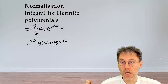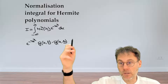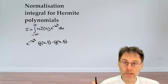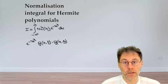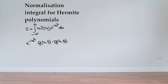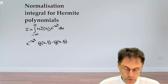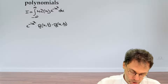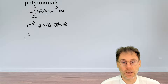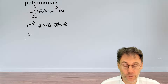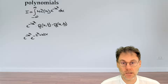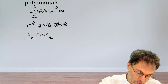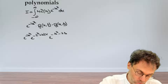Pause the video and write down explicitly what this is — it's basically one big exponential — and then use the definition of the generating function to write it as a series expansion. On the left-hand side, we have exponential minus x squared, then exponential minus t squared plus 2tx from the first generating function, and exponential minus s squared plus 2sx from the second generating function.